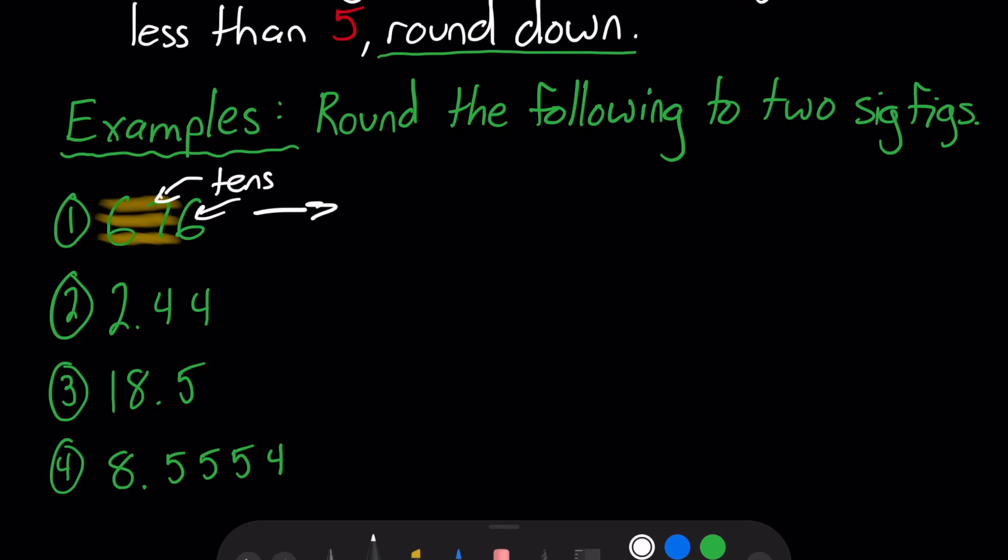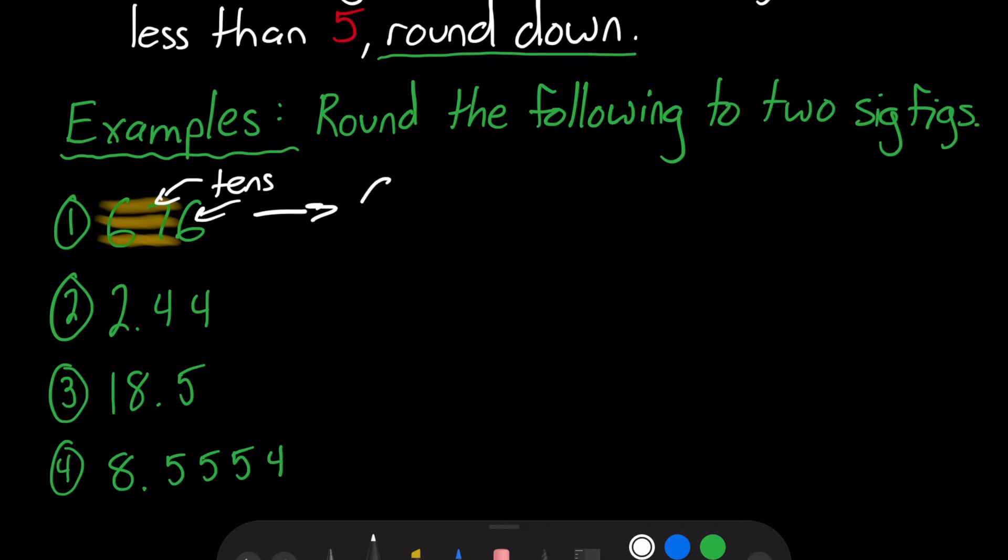So 676 rounded to two significant figures will be 680. I might draw this or write this a little bit neater, but 676 rounded to two sig figs will just be 680. Let's move on to the next one.